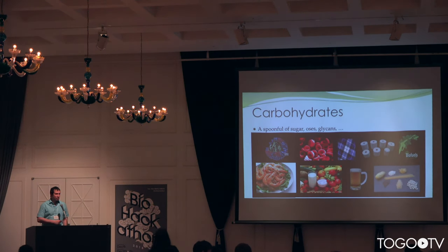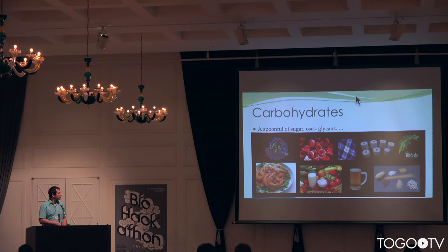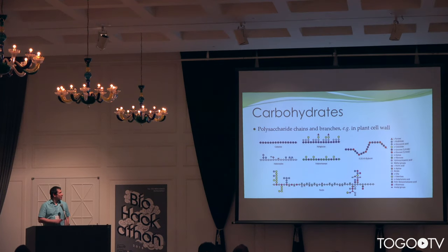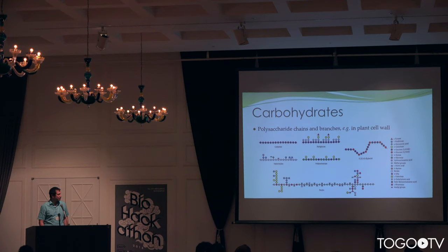As you know, carbohydrates are all over the world — from host-pathogen interaction, blood group, paper production, cellulose to biofuels, and of course the nice foods that we get here in Japan and elsewhere. These carbohydrates are polymers that are quite complex, made from many different monomers that are branched and chained in various ways, as you can see here in the plant cell wall.